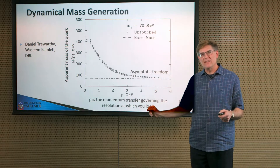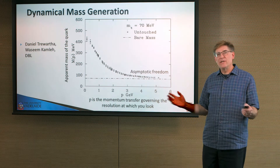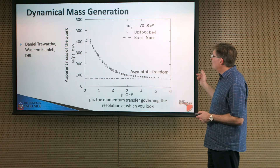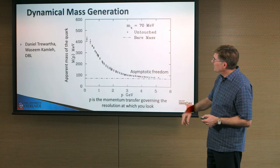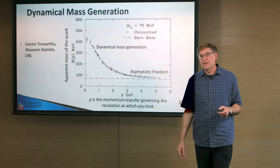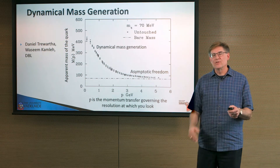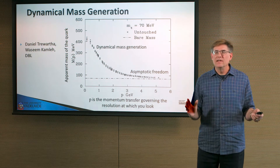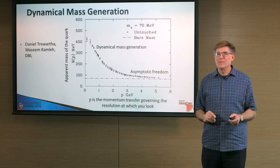This area is called asymptotic freedom — a very important aspect of QCD where the interactions become weak at short distances. But at large distances, this is where you have dynamical mass generation. If you're looking at matter at the scale of a proton, that's a large scale in this game, and you see dynamical mass generation. That, then, is the origin of mass in the universe.